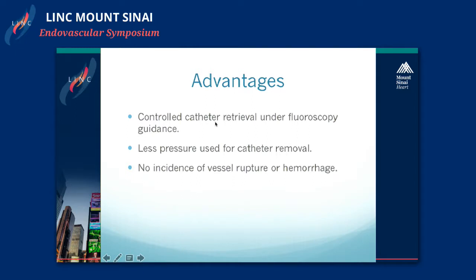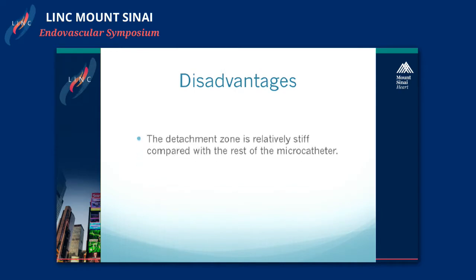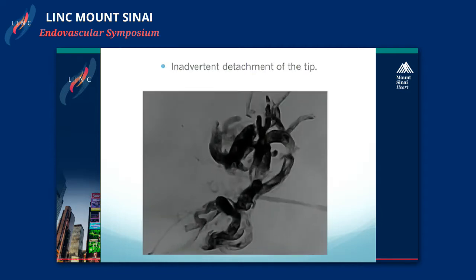The advantages: with Onyx you make reflux purposefully to create a plug, and with NBCA you have a controlled injection instead of trying to inject quickly and pull out — allowing better penetration. It also requires less pressure to remove the catheter, reducing the chance of injury. The disadvantage is it is a bit stiffer at the detachment zone. We've also had two cases where navigating the catheter in tortuous anatomy caused inadvertent detachment of the tip in a proximal artery.